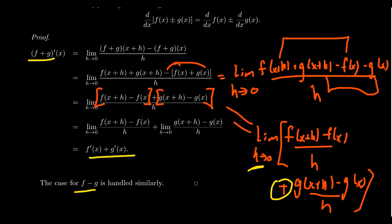Essentially the identical argument works for f minus g — you just change all the signs to negatives throughout. This follows from limit properties we saw previously in chapter two. I do have to caution you that products and quotients will not be so simple; we will approach those in the next lecture.